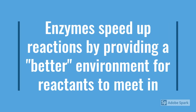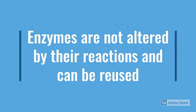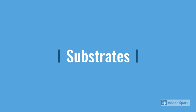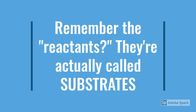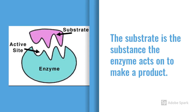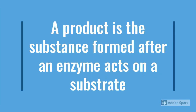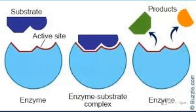So now you understand how important enzymes are. But how do they do these reactions? Enzymes speed up reactions by providing a better place for the reactants to meet. A really cool fact about enzymes is that through all their reactions they are not changed, and so they can be reused. When talking about enzymes, we call reactants 'substrates' — they are basically the substance the enzyme acts on to make a product. A product is the end result of an enzyme reaction.